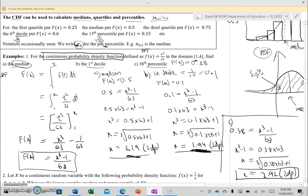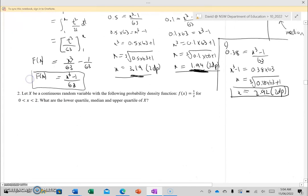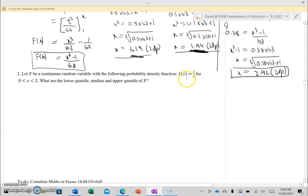Let's do another example. This one's a uniform PDF because we can see f(x) is a constant. So let X be a continuous random variable with the following PDF, f(x) equal to that between 0 and 2. What are the lower quartile, median, and upper quartile? So lower quartile, we're going to be setting F of X equal to 0.25, median is F of X equals 0.5, and upper quartile F of X will be 0.75.